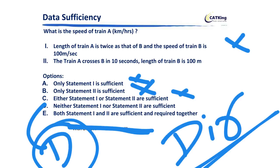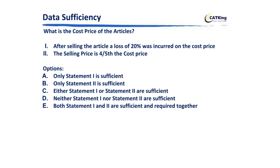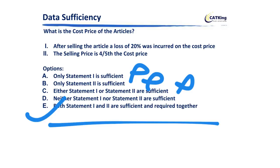The last example is based on cost price and selling price. The question is: what is the cost price of the article? Statement one: after selling the article, a loss of 20% was incurred on the cost price. Knowing only the percentage of loss cannot give the absolute cost price — A is not the answer. Statement two: the selling price is four-fifths of the cost price. Knowing only the ratio also cannot give the absolute cost price — B and C are ruled out. Combining both: you have two equations with two variables, which can be solved simultaneously. The answer is E.